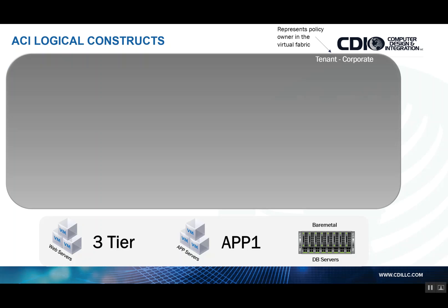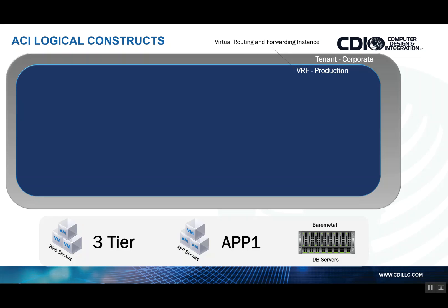In ACI, we start off by creating a tenant, which is a logical container representing the policy owner in the virtual fabric. Within the tenant, we create one or more layer three contexts — or VRFs, virtual routing and forwarding instances. We can have one for production, one for dev, one for QA, one for DMZ, and so on, depending on your design. With the most current version of Cisco ACI, you can deploy up to 32 VRFs in a single tenant, and you can have hundreds of tenants.